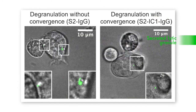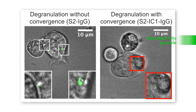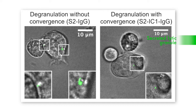Using this system, Schuertau found that convergence promoted the directional secretion of lytic granules at the immunological synapse. Triggering degranulation without inducing convergence resulted in the non-directional secretion of granules at other sites on the NK cell surface.